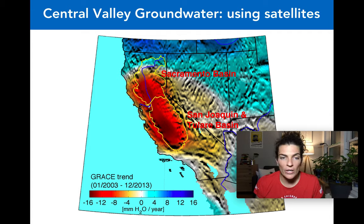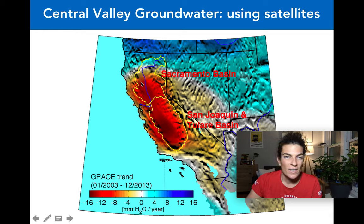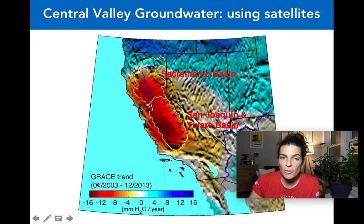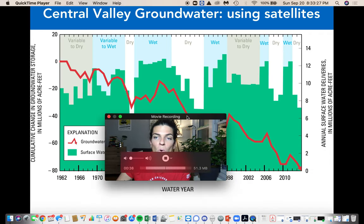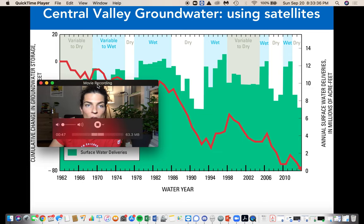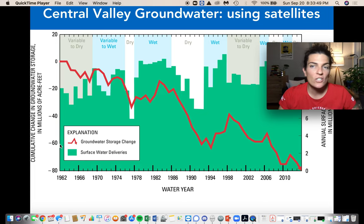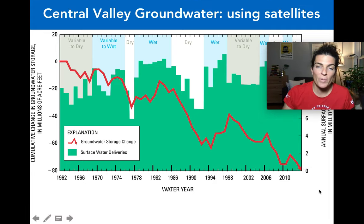NASA launched the GRACE satellite in 2002, which began taking groundwater data in 2003. Looking at the trend from 2003 to 2013 for the Central Valley, the reds on the map indicate significant groundwater loss throughout the basin. Approximately 20 million additional acre-feet were lost in just that 10-year period — suggesting the rate of excess discharge through pumping may be accelerating compared to the 41-year period from 1962 to 2003.